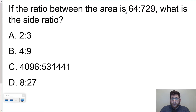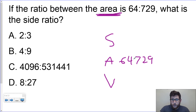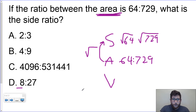Let's look at one more SAV problem. The ratio between the areas is 64 to 729 — what is the side ratio? We're going backwards this time, so instead of squaring we take the square root. The square root of 64 is 8, and the square root of 729 is 27. So my answer is D: 8 to 27.